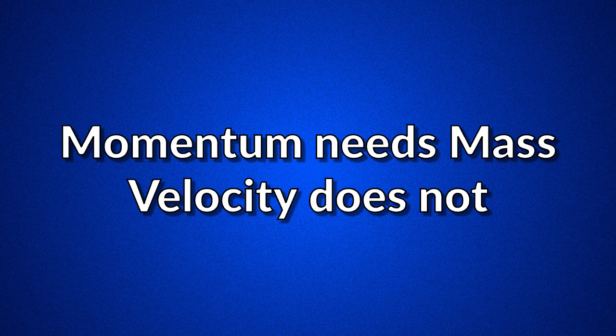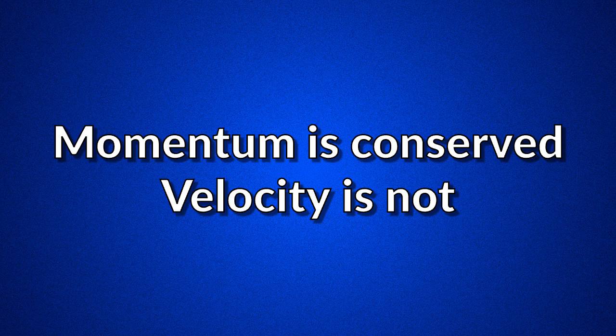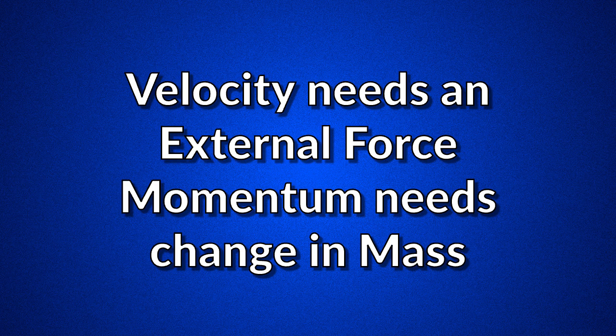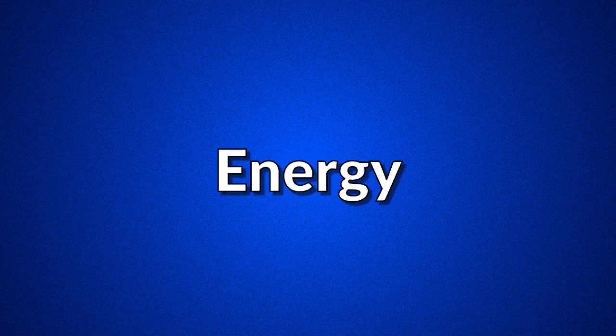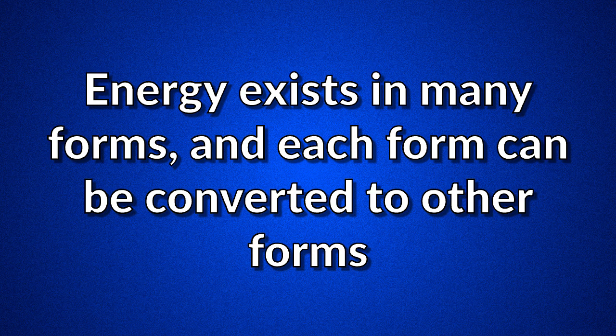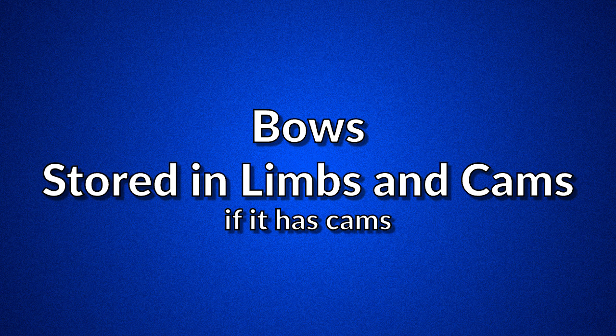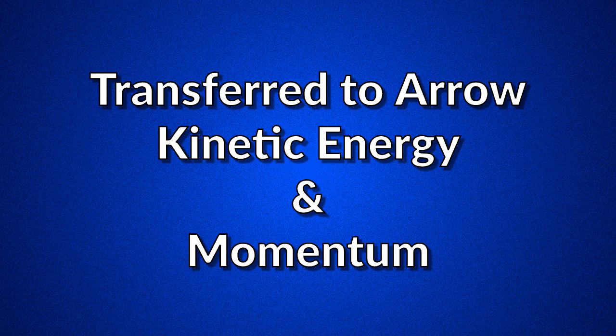Momentum versus velocity: momentum requires a mass while velocity does not. Momentum of an object is conserved in a closed system, where velocity of an object is not. For velocity to be changed there has to be an external force; to change momentum there needs to be a change in mass. Energy exists in many forms and each form can be converted to other forms. With bows, the energy is stored in the limbs and cams when the string is pulled back, and is transferred to the arrow when shot in the form of kinetic energy and momentum.